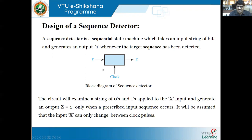This is a simple block diagram of a sequence detector where x is the input, where a sequence or string of bits enters the block in synchronous with the clock, and z is the output. The sequence detector generates z equal to one whenever the target sequence has been detected. The circuit examines strings of zeros and ones applied to the input and generates output z equal to one only when a prescribed input sequence occurs. It is assumed that the input x can only change between the clock pulses.